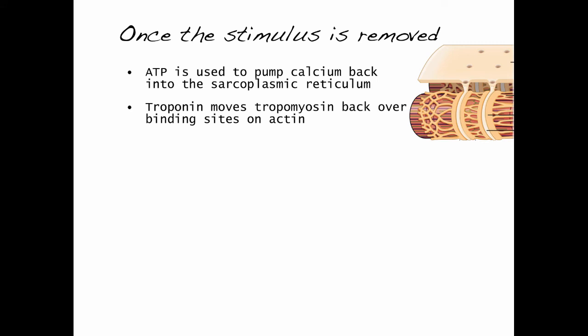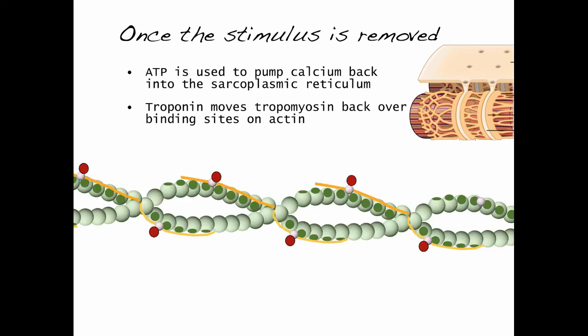However, once the stimulus is removed—that is, the action potential—ATP is used to pump calcium back into the sarcoplasmic reticulum. Because calcium is no longer attached to troponin, it will move tropomyosin back over the binding sites of actin, as you can see here.